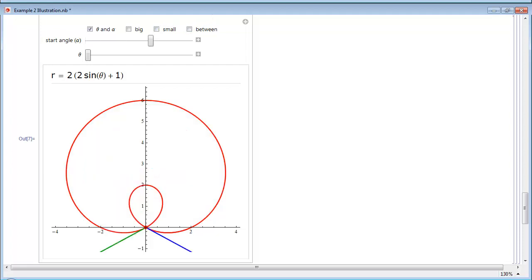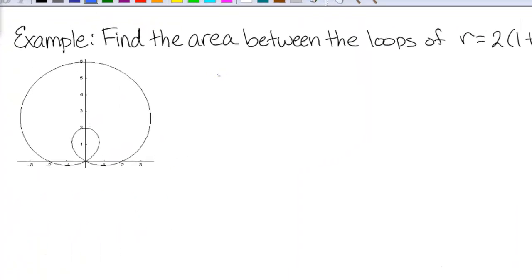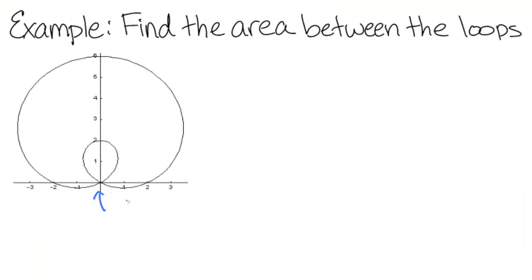In order to do this, we need to determine the angles where the outer loop starts and stops and the inner loop starts and stops. These points all occur where the graph crosses the origin or pole. Those are the places when r equals 0. So if r equals 2 times the quantity 1 plus 2 sine theta, and we set that equal to 0, that will happen when 1 plus 2 sine theta equals 0.